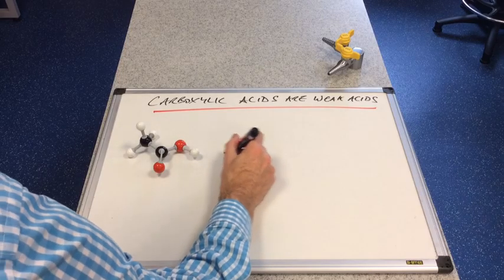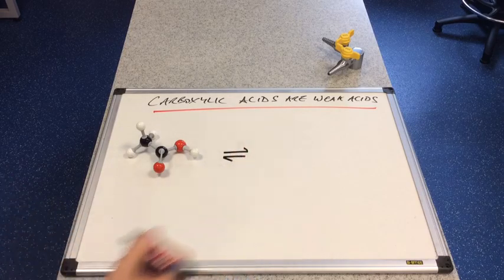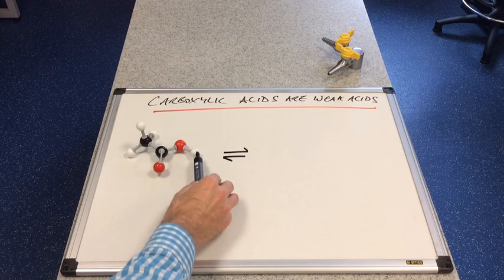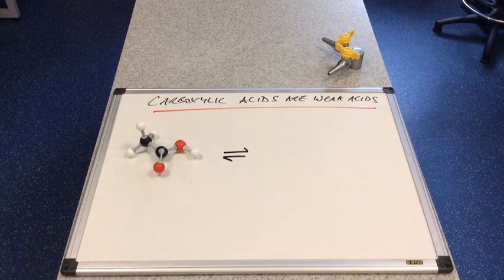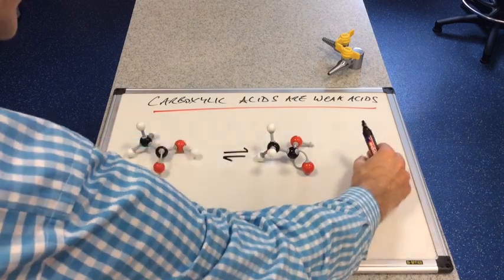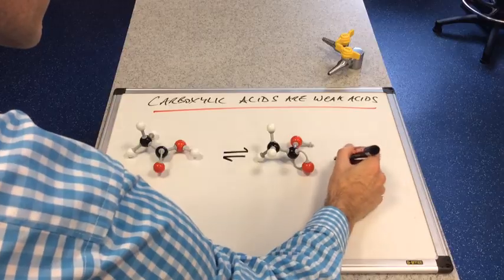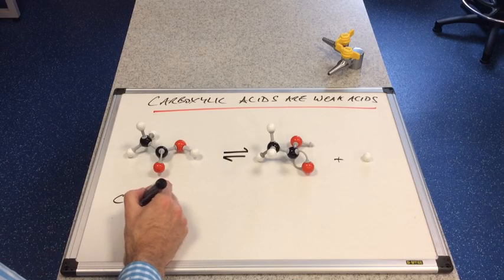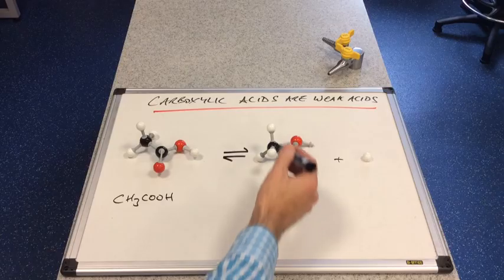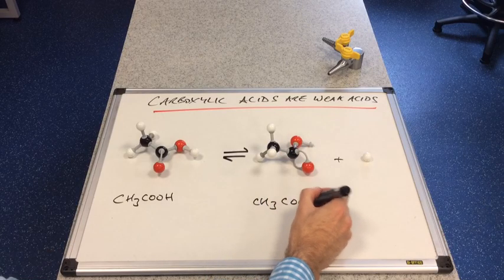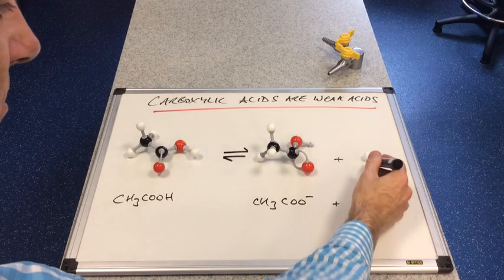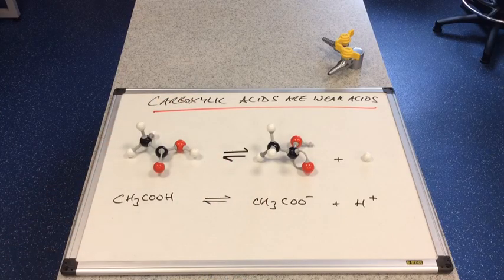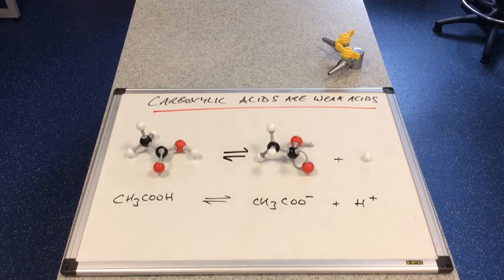So they are going to partially dissociate into their ions and obviously one of the ions will be this hydrogen is going to come off as a proton. And so what we're going to get will be this ion here and this ion here and what we've got therefore is this is ethanoic acid CH3COOH this is CH3COO- and this is the proton this is H+. Reversible arrows remember signify the partial dissociation or partial ionisation it's sometimes referred to as.